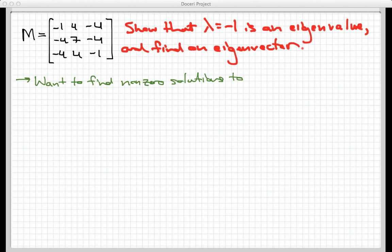This time we're looking at a 3x3 matrix, the one you see here called M, and we're going to show that lambda equals negative 1 is an eigenvalue, and then we're going to find an eigenvector that corresponds to that eigenvalue.